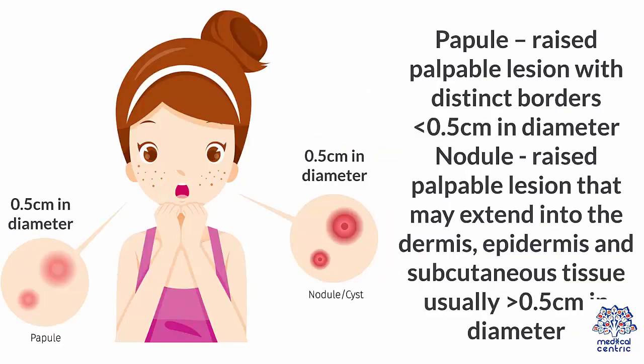Papule is a raised, palpable lesion with distinct borders less than 0.5 cm in diameter. Nodule is a raised, palpable lesion that may extend into the dermis, epidermis, and subcutaneous tissue, usually greater than 0.5 cm in diameter.